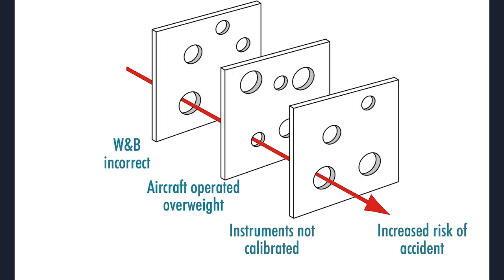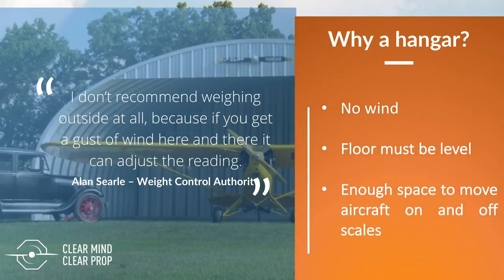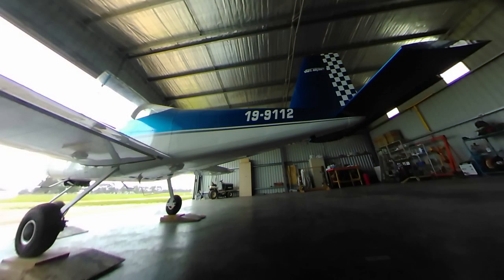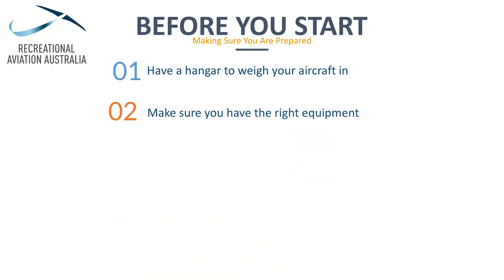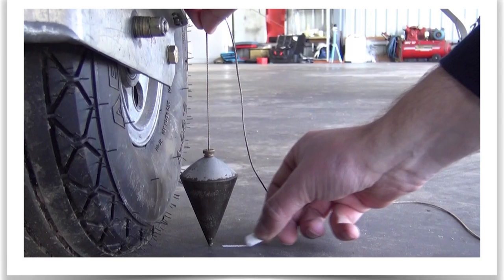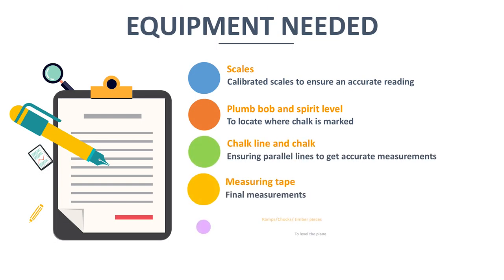To this point, we have briefly discussed why weight and balance is important. Let's now get into the correct method of weighing the aircraft. Before you start, consider what you need. Have a hangar to weigh your aircraft in — the hangar must have a solid floor and doors that close to prevent the wind causing any inaccuracies. There should also be sufficient space to move the aircraft on and off the scales. Make sure you have the correct equipment: calibrated scales to ensure correct reading, plumb bob and spirit level, chalk line and chalk, measuring tape, ramps, chocks, and perhaps pieces of timber to aid levelling.